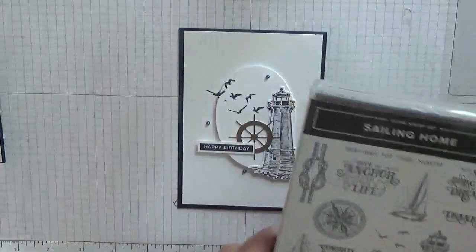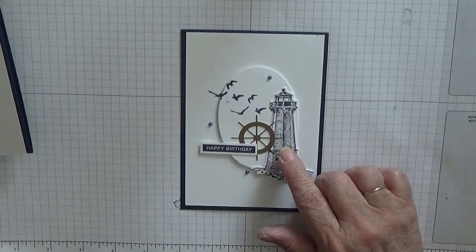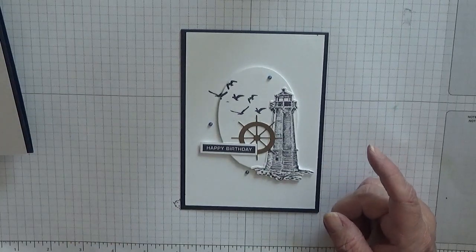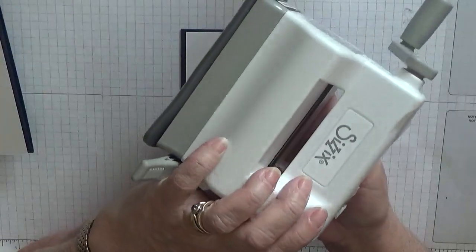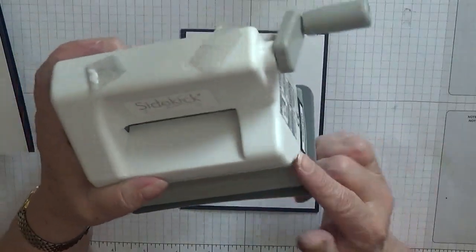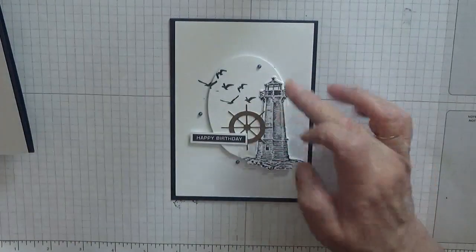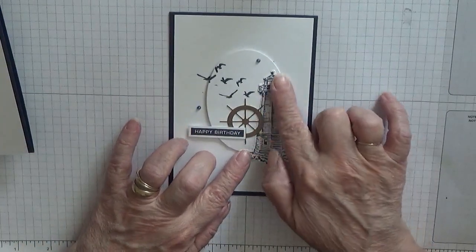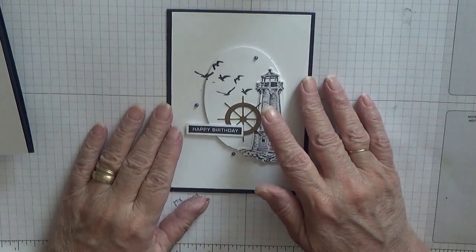I'm also using Label Me Bold and the Happy Birthday sentiment. Now for Mother's Day I received this Sizzix Sidekick. It's a baby Big Shot, only a tiny one, and I'm going to use that to cut an oval out, the second largest straight oval. It will cut out the lighthouse and the steering wheel as well, but I'd already cut them out when I made this card.